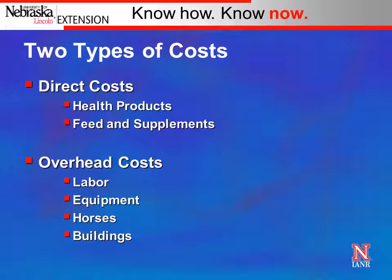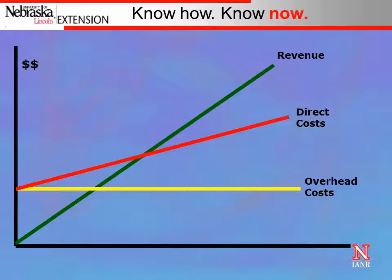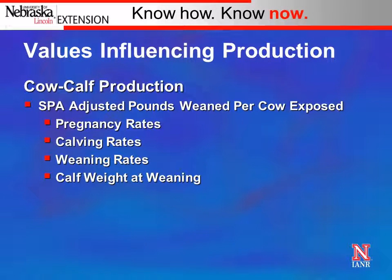If I have 300 cows and buy 100 more from my neighbor, I'm probably not going to hire another person, buy another four-wheeler, get another horse, or build another calving shed. That equipment and labor will just be spread over 400 cows instead of 300. This graph shows the challenge of managing overhead and direct costs relative to revenue — profit occurs between the green revenue line and the red direct cost line. Reducing costs while maintaining revenue improves profitability. On the production side, pregnancy rates, calving rates, weaning rates, and calf weight at weaning all influence pounds of calf produced.